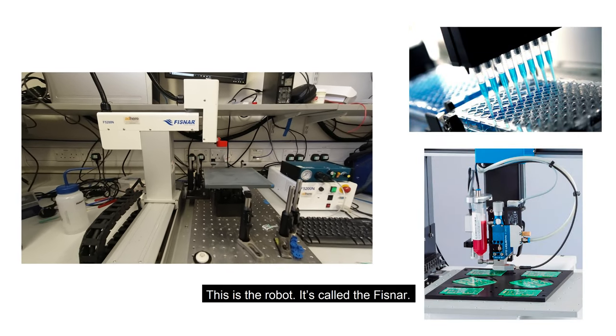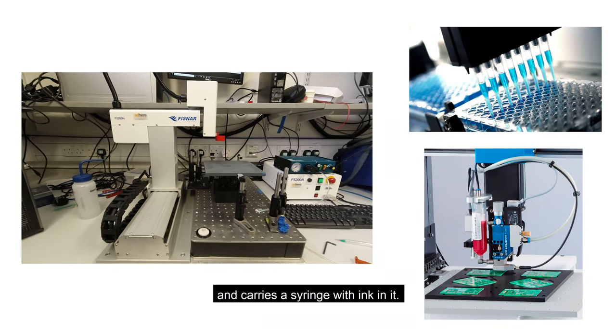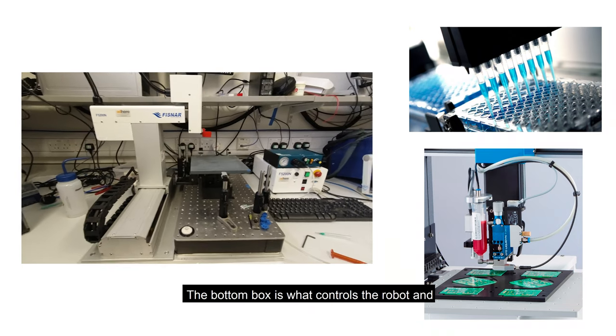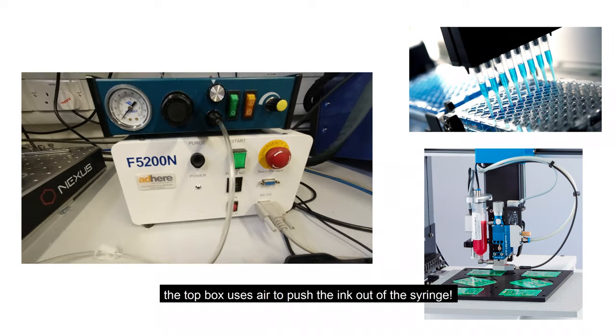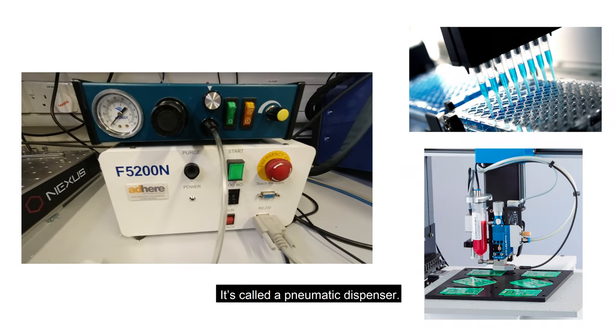This is the robot. It's called the FISNAR. It can move in three directions and it carries a syringe with ink in it. The bottom box is what controls the robot, and the top box uses air to push the ink out of the syringe. It's called a pneumatic dispenser.